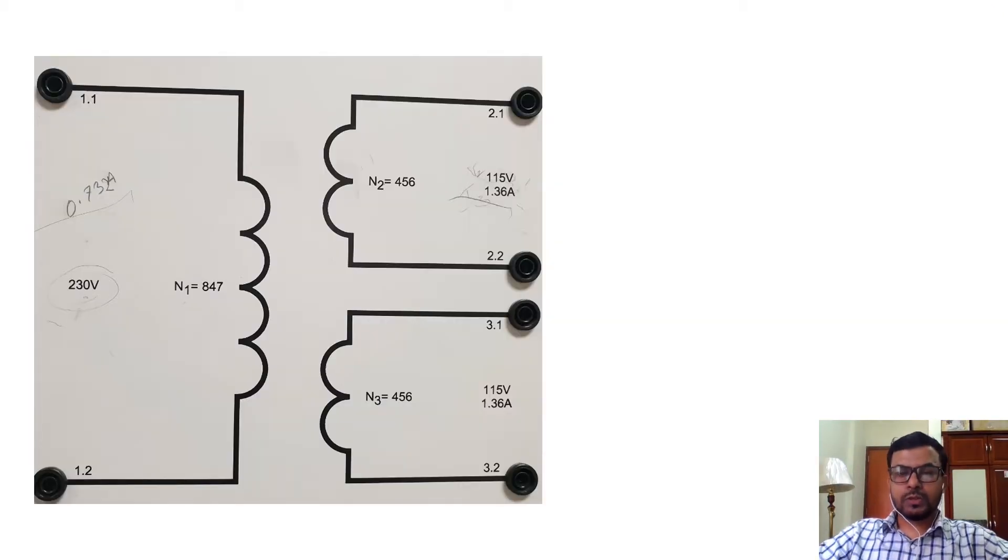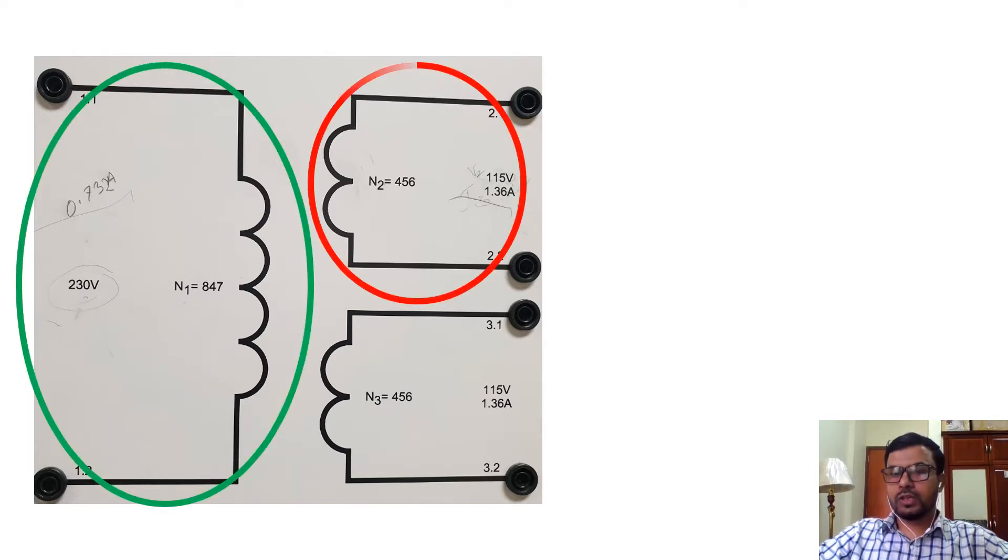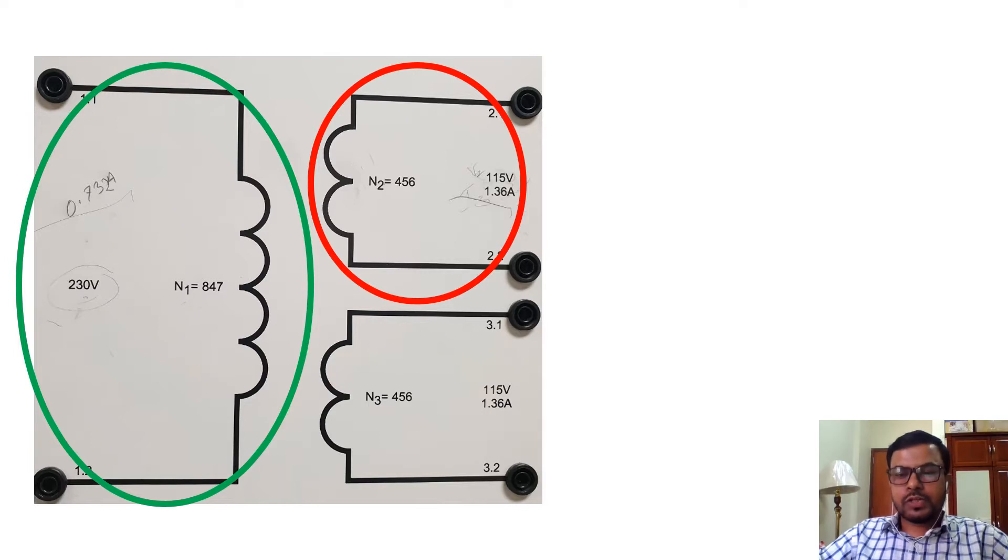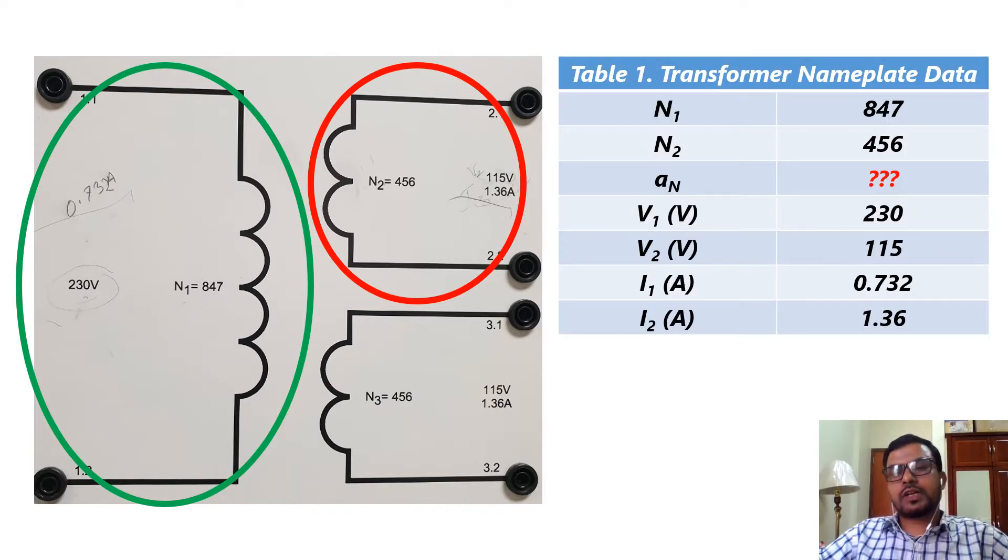This transformer will be used in this experimentation. As you can see, it has three windings. The left side winding will be used as the primary, whereas the right side top winding will be used as the secondary. The third winding will not be used at all in this experimentation. This table shows us the nameplate data of the transformer, for example, the turns ratio, primary and secondary rated voltages and currents.